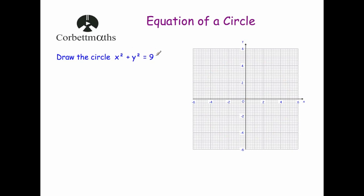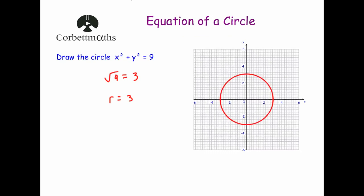Next question: draw the circle x² + y² = 9. At GCSE level the center is at the origin. The radius — we take the square root of 9, which is 3. So you put the point of your compass on the origin, place the pencil on 3, and draw a circle carefully. It should look like a nice circle with center at the origin passing through 3, -3, and so on. Use your compass — avoid drawing it freehand.